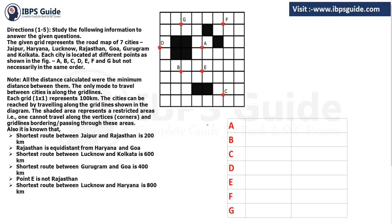The given grid represents the road map of seven cities: Jaipur, Haryana, Lucknow, Rajasthan, Goa, Gurugram, and Kolkata. Each city is located at a different point as shown in the figure. We have seven points and seven cities but we don't know which city belongs to which point. All distances calculated are the minimum distance between them, and the only mode of travel between cities is along the grid lines.